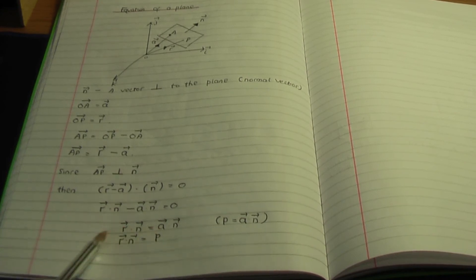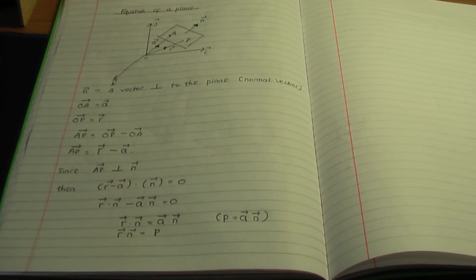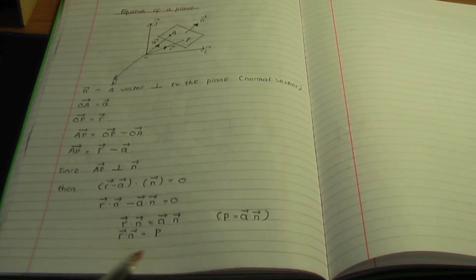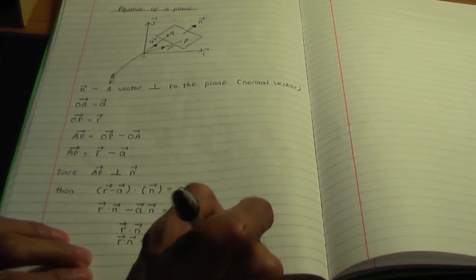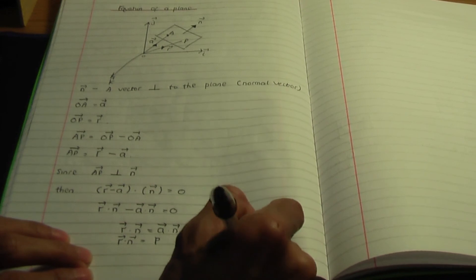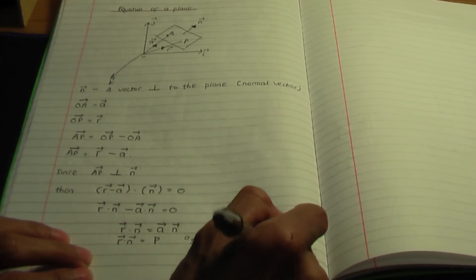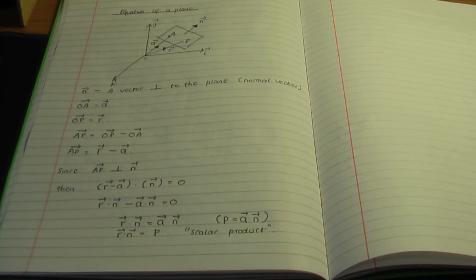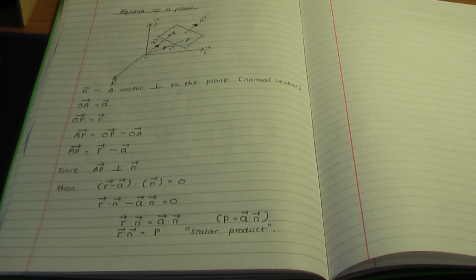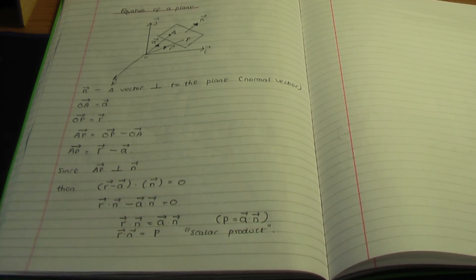This result is the equation of the plane in what we call scalar product form — this is the scalar product equation of the plane. So that ends this video. I hope you found this video helpful. In the next video, I'll go through some examples in order to show how this result is used. I hope to see you then.